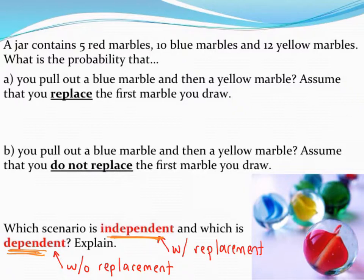So anyway, let's take a look at the first example up here. We want to find the probability that first we pull out a blue marble, and there's that word that tells us to multiply these pieces together, and then a yellow marble, and we are replacing this.